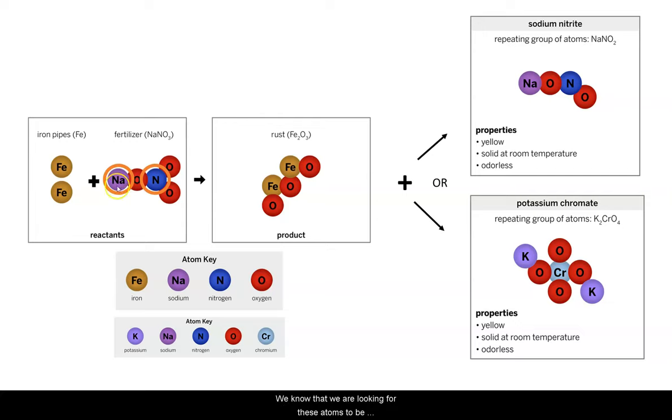We know that we are looking for these atoms to be included in the substance. If we take a look at our possible substances, we notice that this does include a sodium and a nitrogen atom. It also contains oxygen, which is also something that exists in our reactants.